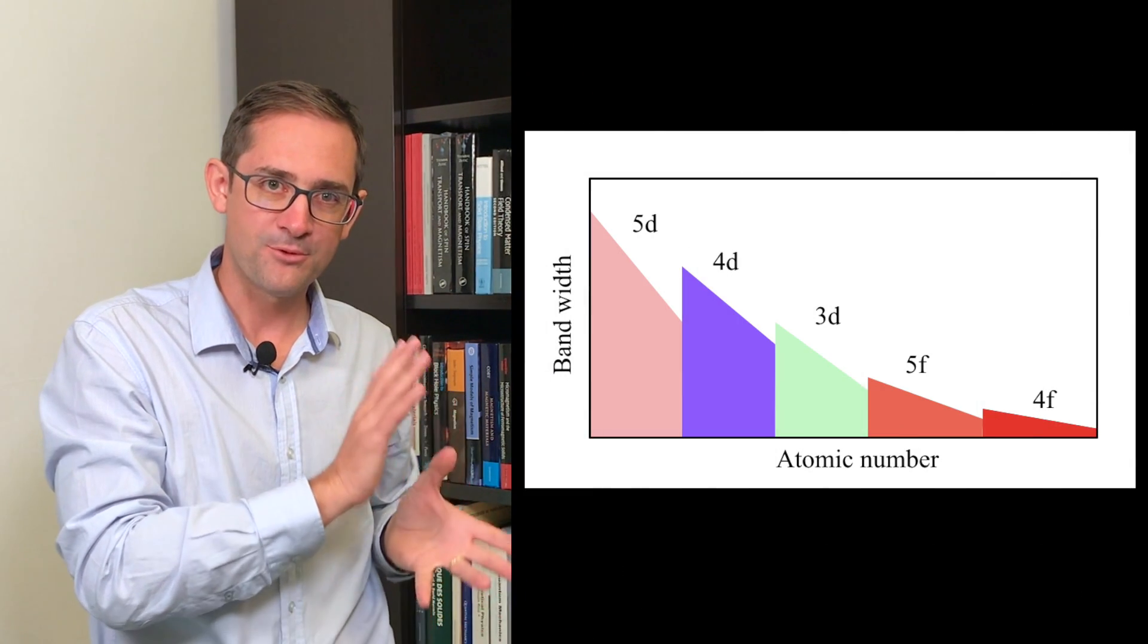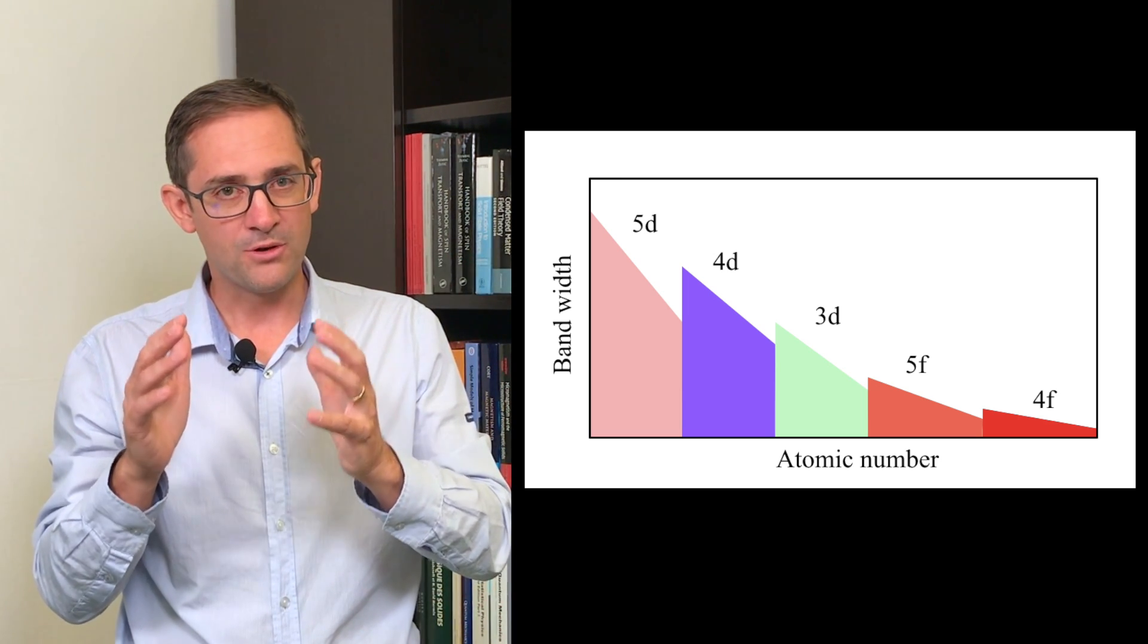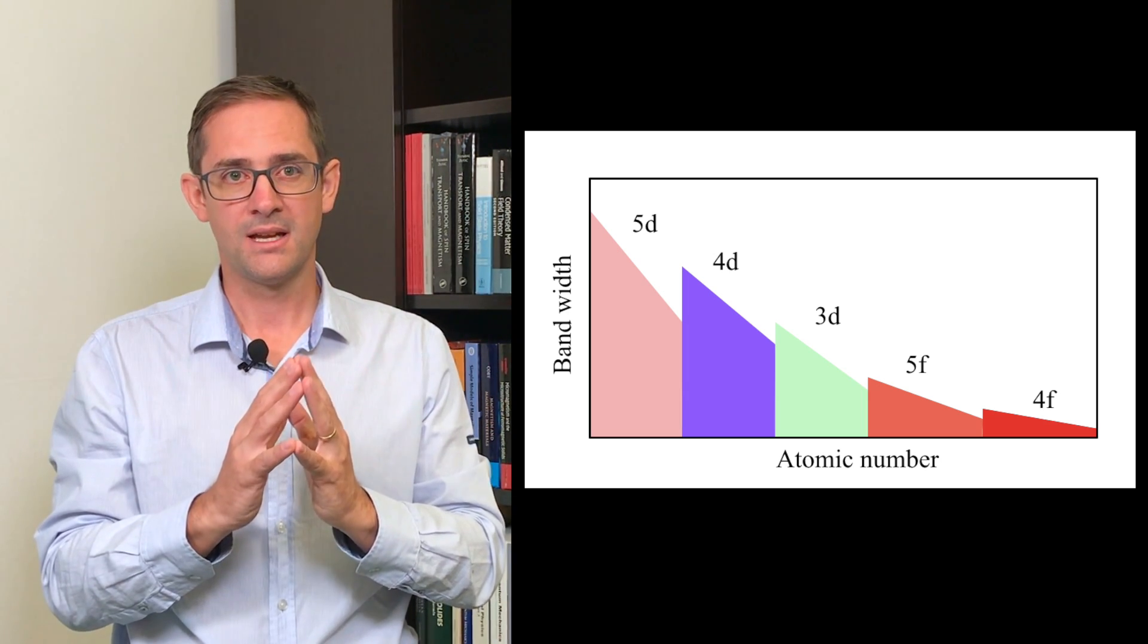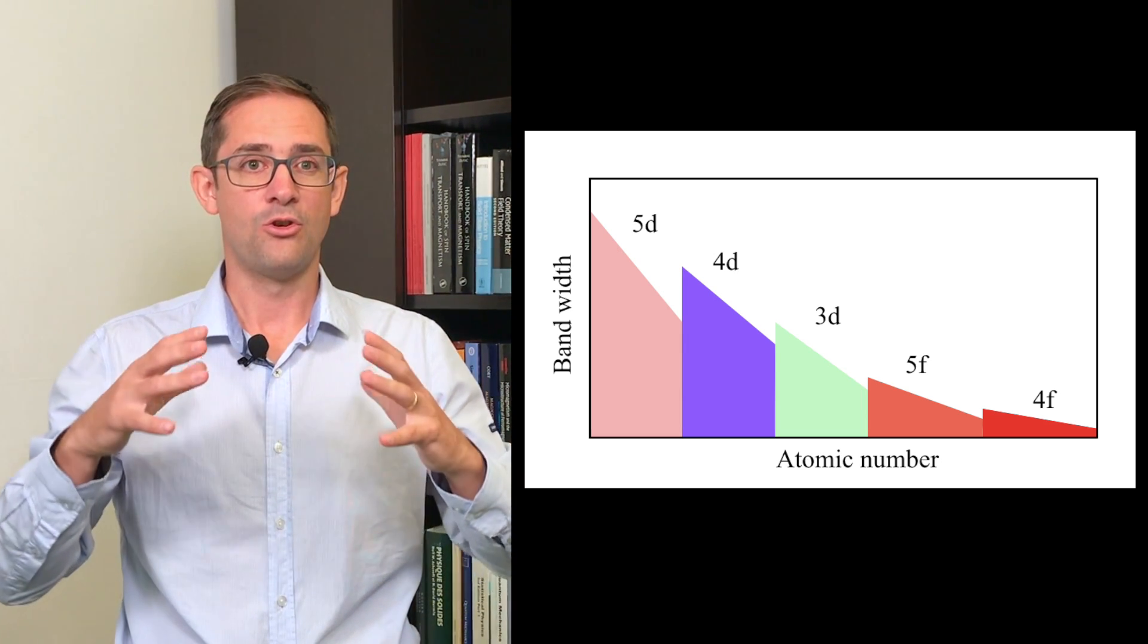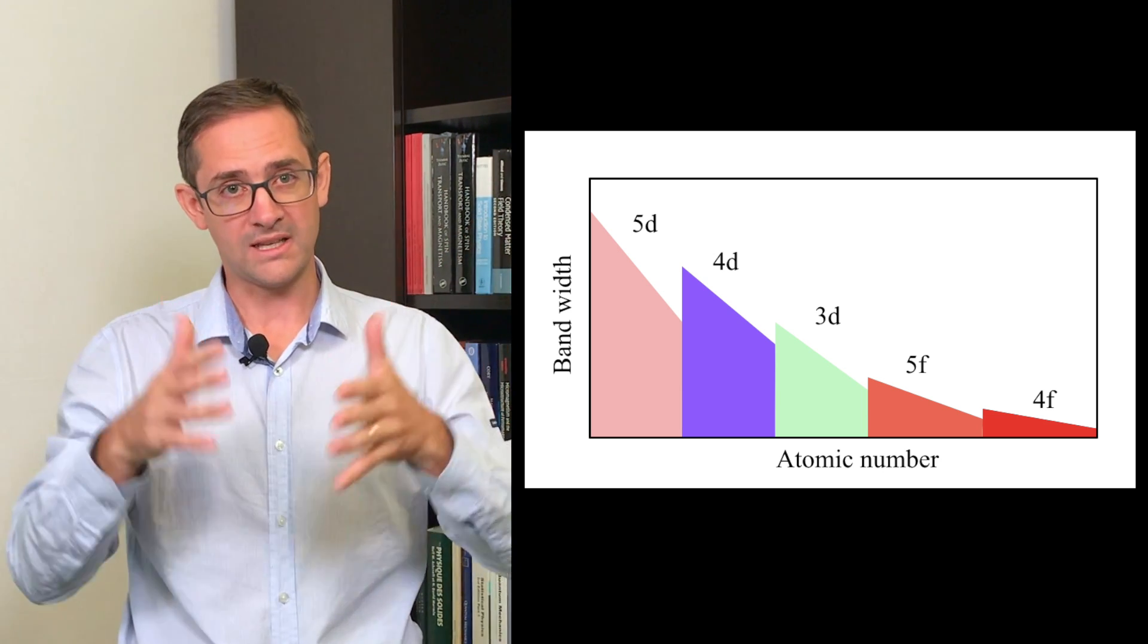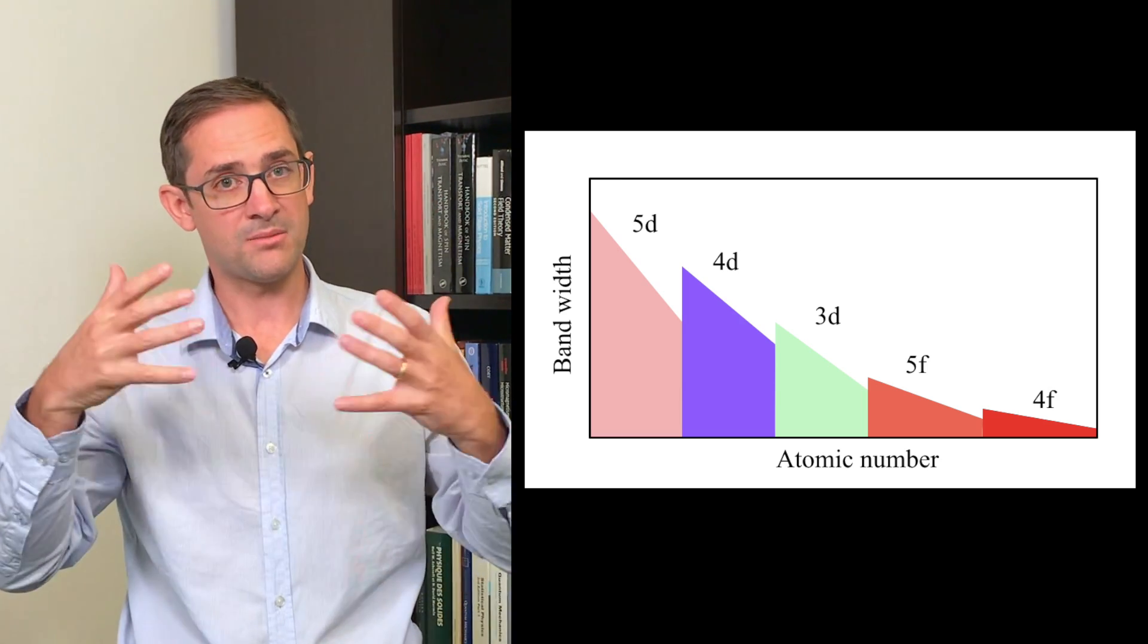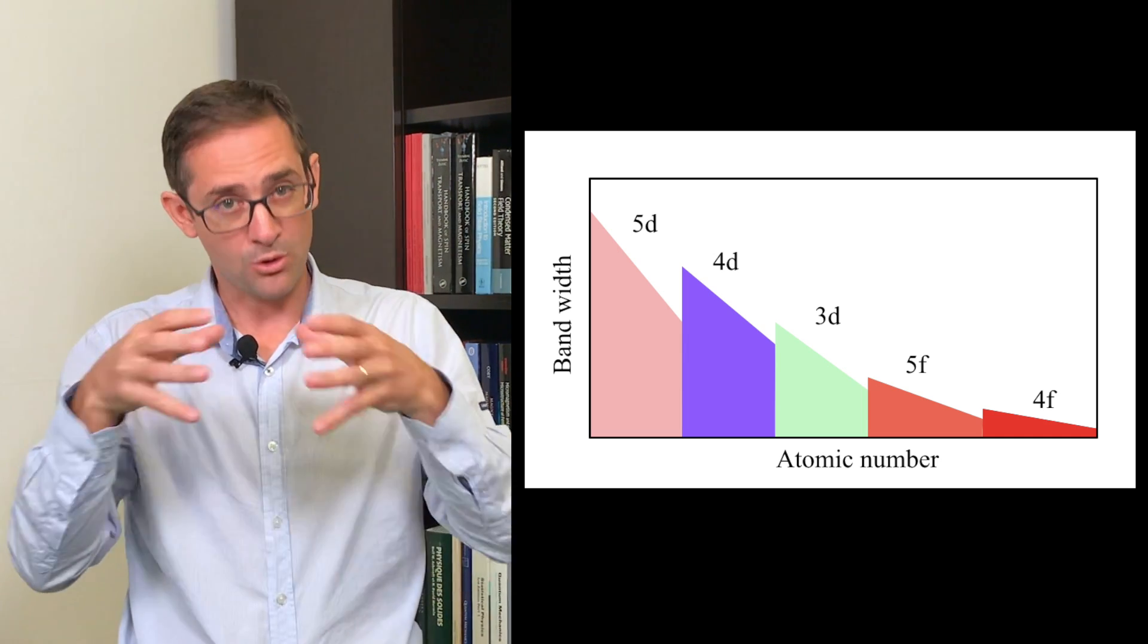So this graph summarizes what we just discussed. The bandwidth decreases when you go from the 5d series to the 3d series, and it's even narrower for 4f and 5f electrons, leading to more localization. So in other words, lower energetic outer shell leads to more localization. Inside each series, the bandwidth decreases when increasing the number of valence electrons. So more electrons means more localization.